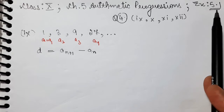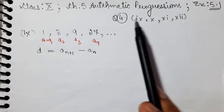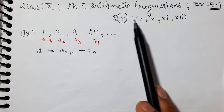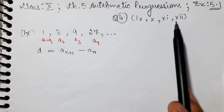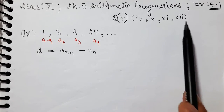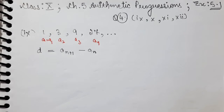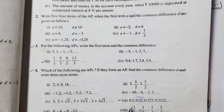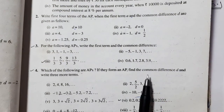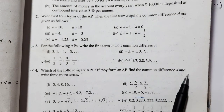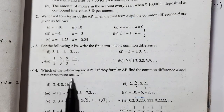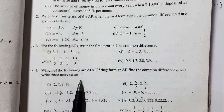Today, we will do Exercise number 5.20, question number 4. We will solve parts 9 to 12 in this video. The question is: which of the following are APs? If they form an AP, find the common difference D and write 3 more terms.